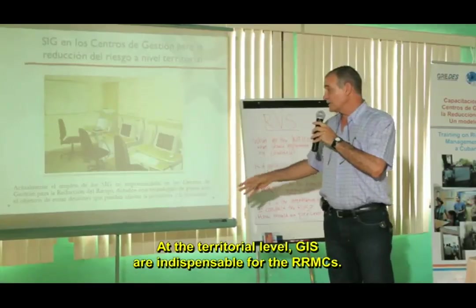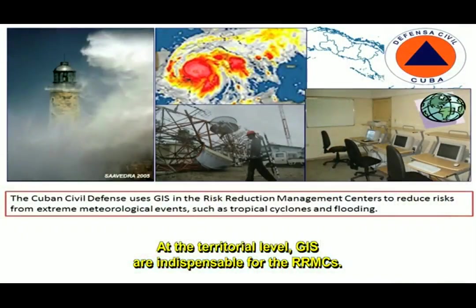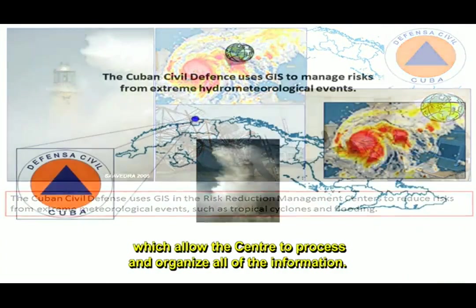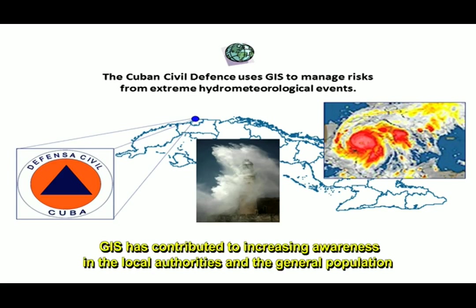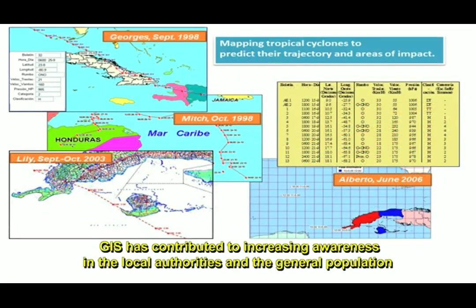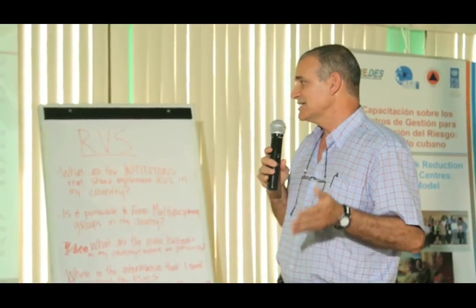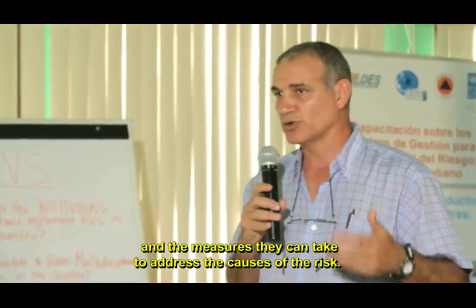At the territorial level, geographic information systems are indispensable in risk management centres. Today, a risk centre without a geographic information system is impossible to manage, because it is a whole organization of information. GIS has contributed to raising awareness among local authorities and the population about the dimensions of the risks they are exposed to, and consequently to acting on the causes that originate them.